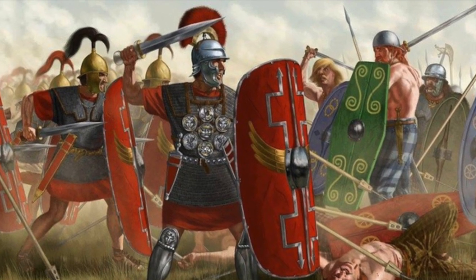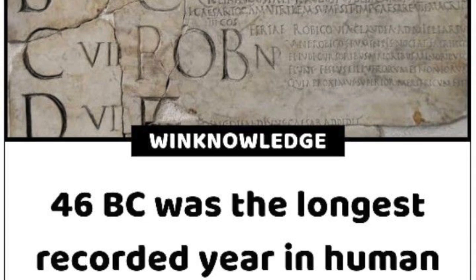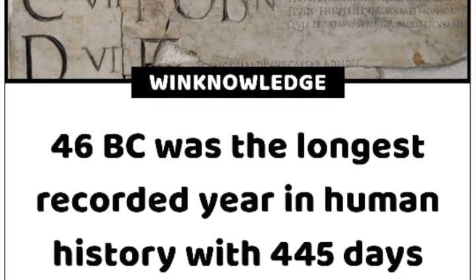Coming back to our story: Julius Caesar named July after himself and added a day to make it 31 days, as he needed to leave a legacy. And why did they need a 445-day year? Their calendar was so horribly wrong that they had to add all those days just to realign it. After Caesar, Augustus succeeded him and, not to be outdone, named the month of August after himself — also giving it 31 days. That meant two days had to be taken from somewhere.